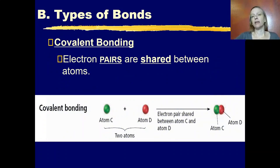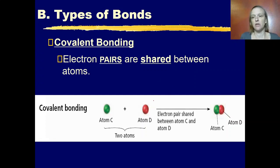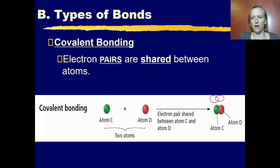Covalent bonding is another type of bonding. In covalent bonding, electron pairs are shared between atoms. We have two atoms that come together and share electrons between them — they just kind of overlap in this region with their shared electrons.